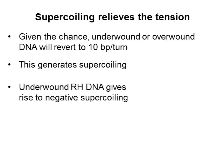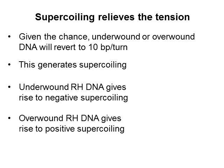If we underwind a double helix such that the twist is lower than what it prefers to be, the supercoiling that arises is defined as negative supercoiling. Conversely, if we overwind the helix such that the twist is higher than what the DNA prefers to be, the supercoiling is called positive.